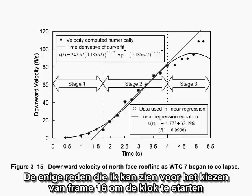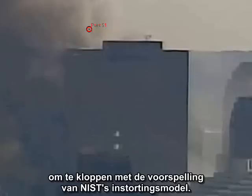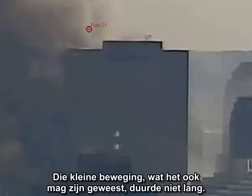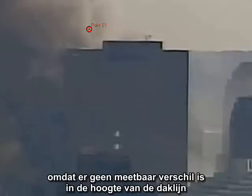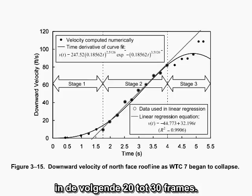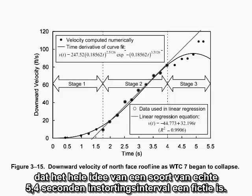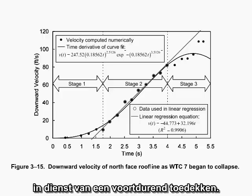The only rationale I can see for choosing frame 16 to start the clock is to make the measurement come out to exactly 5.4 seconds, to agree with the prediction of NIST's collapse model. But what if I'm wrong? What if they did see some tiny movement on a clearer version of the video? That tiny movement, whatever it might have been, did not last — it would have had to have been a glitch, and scientists at NIST would recognize it as a glitch, because there's no measurable difference in the height of the roof line for the next 20 to 30 frames. The whole idea that there is any kind of real 5.4-second collapse interval is a fiction — a crude fabrication, and the three-stage collapse sequence is pseudoscience in the service of an ongoing cover-up.